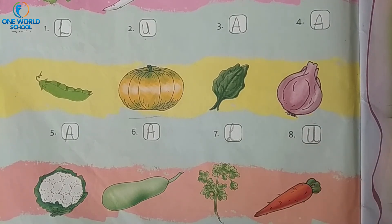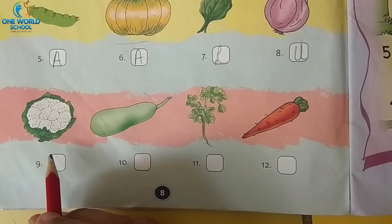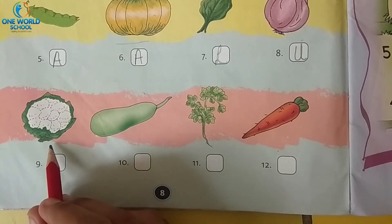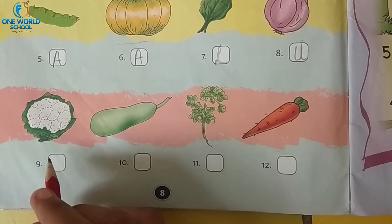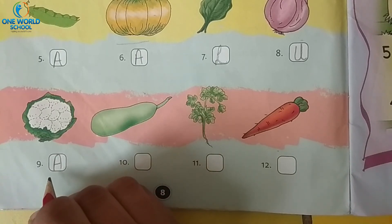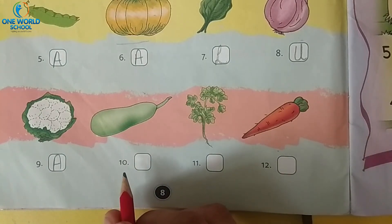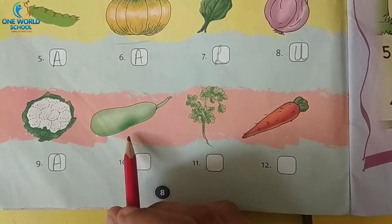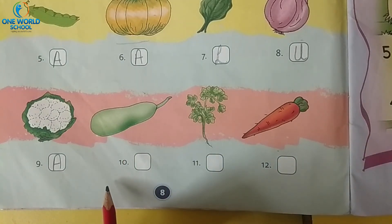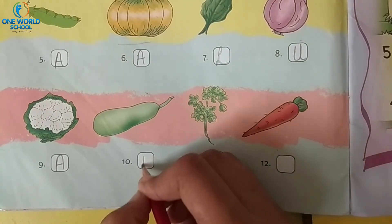Now number 9 — which is this vegetable? Cauliflower. Kya hai yeh? Cauliflower. It grows above the ground, isliye hum idhar kya likhenge? A. Very good. Aap sab ko toh aa gaya hai na abhi. Now number 10 — which is this vegetable? Bottle gourd. Kya bolte hain hum ise? Bottle gourd. Bottle gourd grows above the ground — kahan grow karte hain? Above the ground. So right here: A.